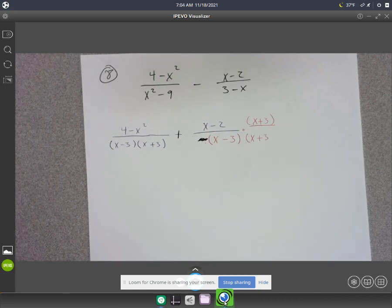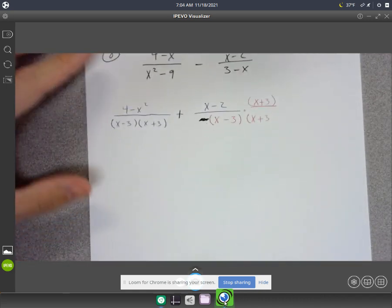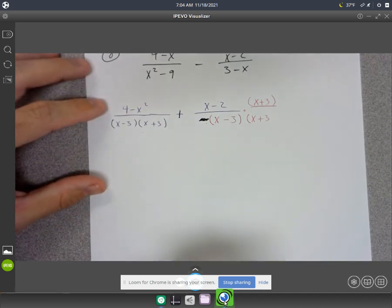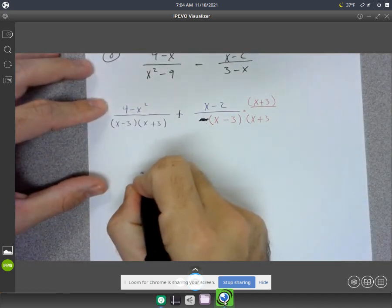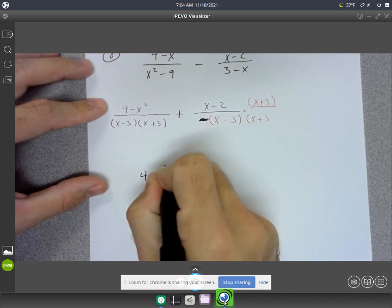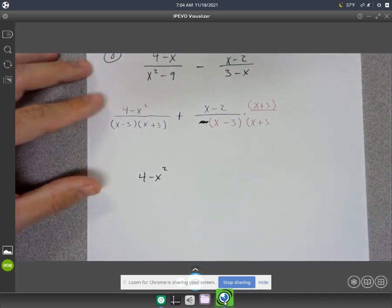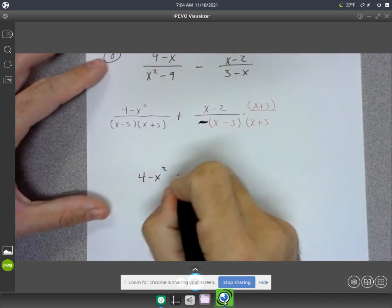And then continue on later, and you'll have the answer, I guess. All right, it's going to be 4 minus x squared. I don't have to factor that or anything. The numerators you don't have to factor.